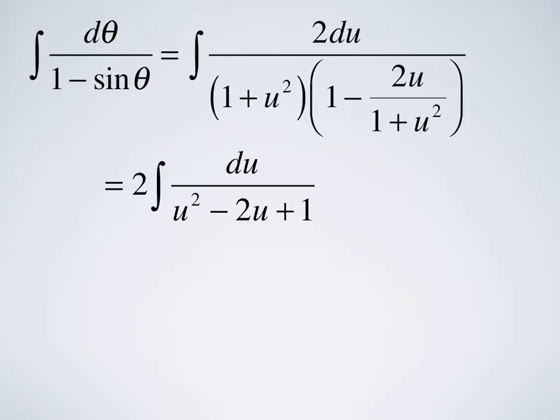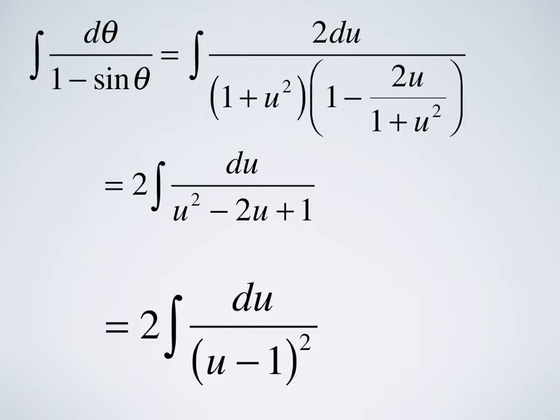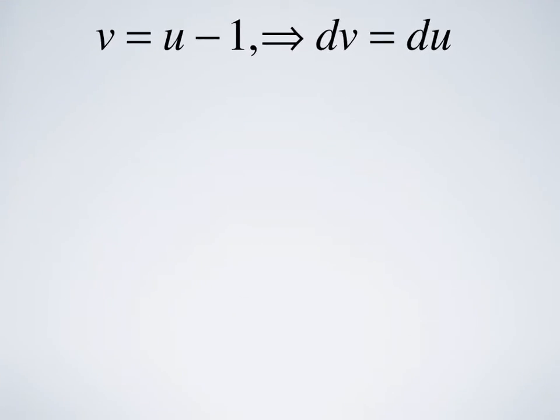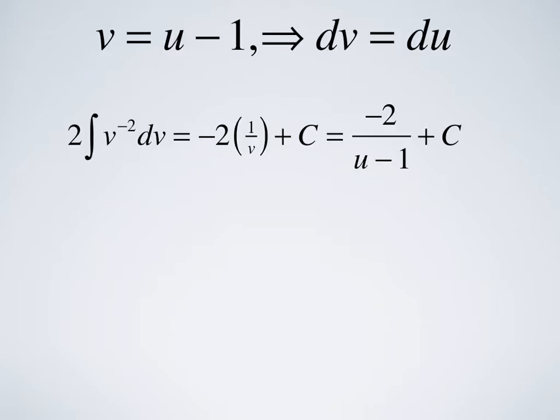We get 2 times the integral of du over u² - 2u + 1. It turns out that's a perfect square, so we have 2∫du/(u-1)². This is essentially an elementary integral — all we have to do is a substitution. We take v = u - 1, so dv = du. We get 2 times the integral of v⁻² dv, which is -2/v, or -2/(u-1), plus the constant of integration.